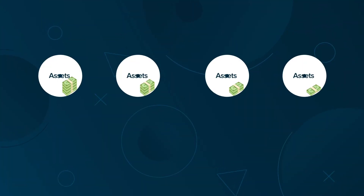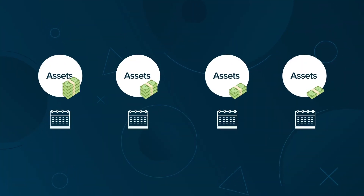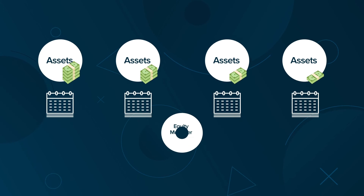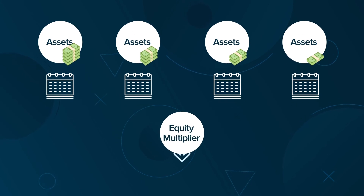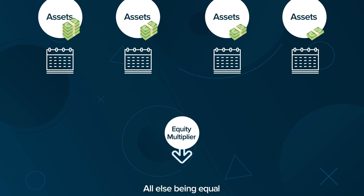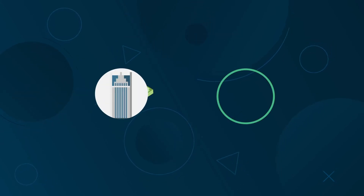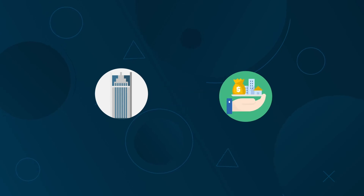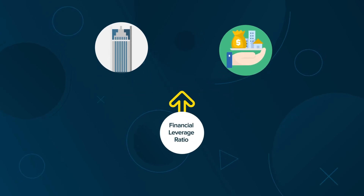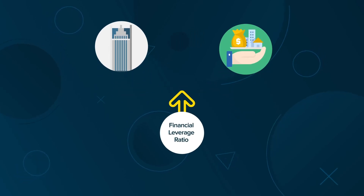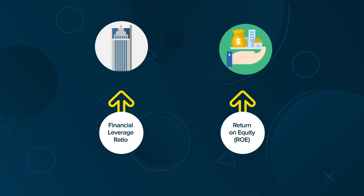If the value of assets depreciates over time, the equity multiplier will decrease, all else being equal. By borrowing more to purchase new assets, management can increase the financial leverage ratio, thereby increasing ROE.